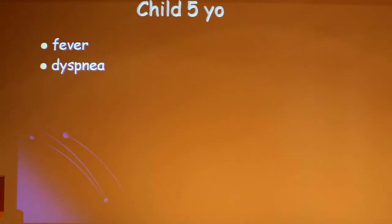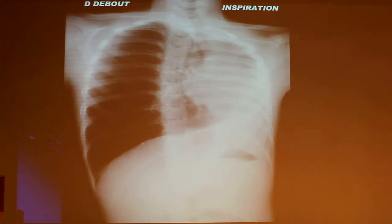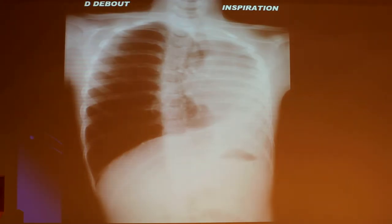This is a child of five years. He has a fever and dyspnea. We do a chest X-ray and you can see there is an opacity of the mediastinum and of the left angle. You can see a deviation of the mediastinum and of the trachea to the left.